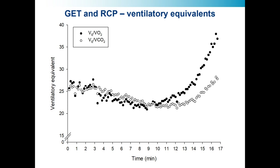Here you see a plot of the ventilatory equivalence response to exercise — minute ventilation divided by VO2 (VE/VO2, black dots) or divided by VCO2 (VE/VCO2, white dots). As exercise intensity increases, VE/VO2 gradually declines and then starts to rise, and the point at which it starts to rise we demarcate as the gas exchange threshold, or GET.